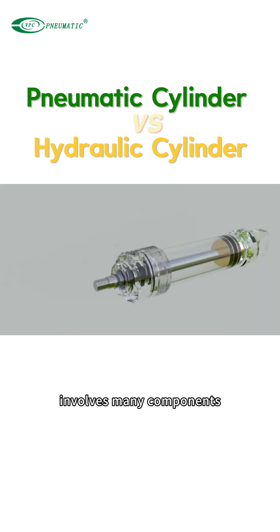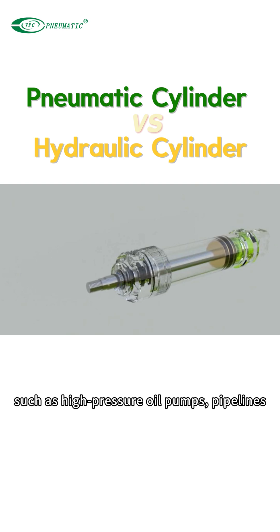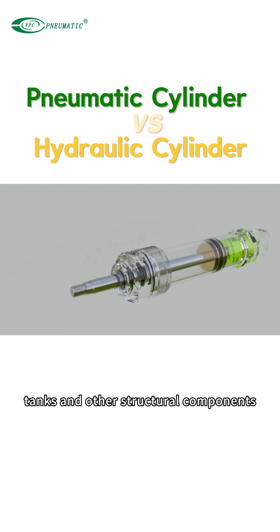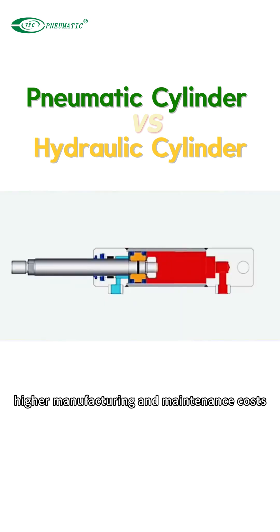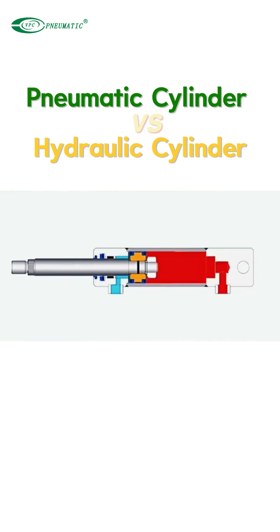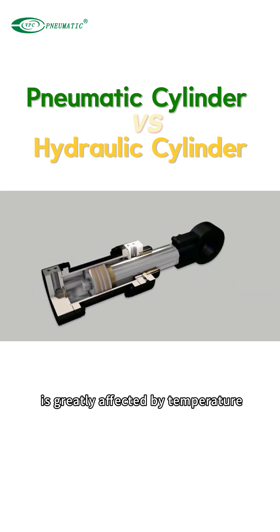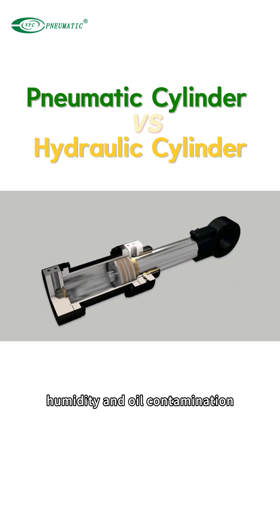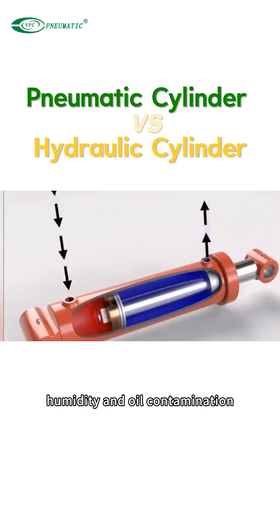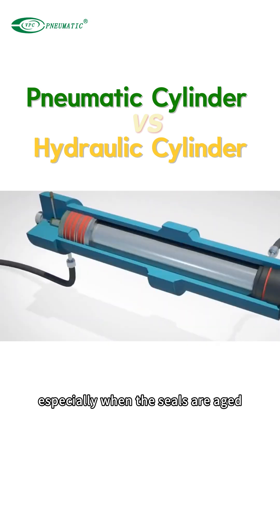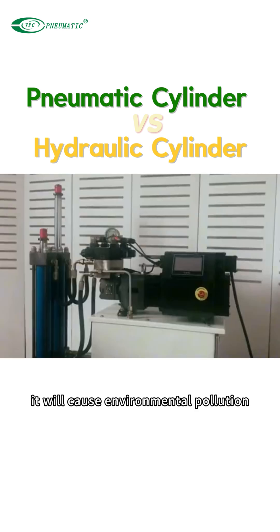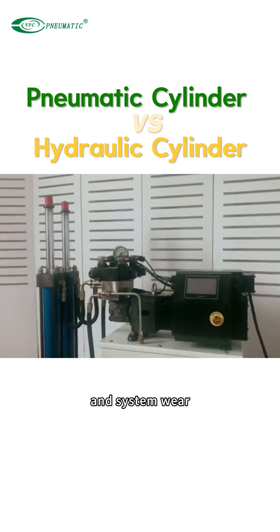However, the hydraulic system involves many components such as high-pressure oil pumps, pipelines, tanks, and other structural components, making the system relatively large and complex with higher manufacturing and maintenance costs. The hydraulic cylinder system is greatly affected by temperature, humidity, and oil contamination, and may have oil leakage problems, especially when seals are aged, causing environmental pollution and system wear.